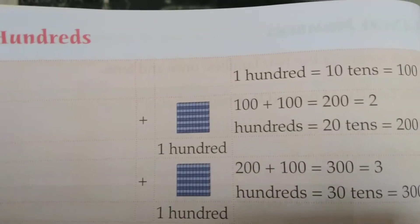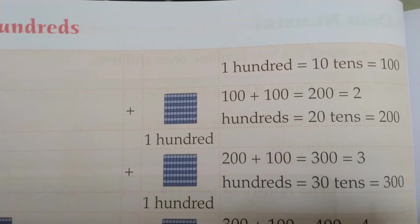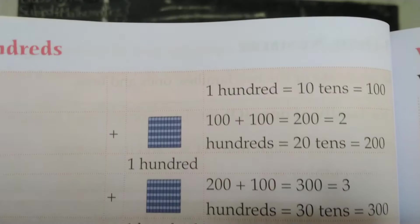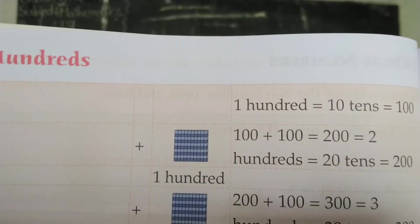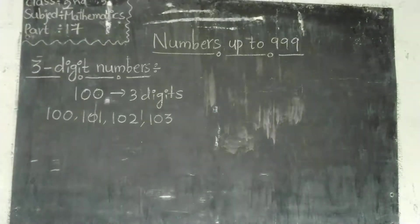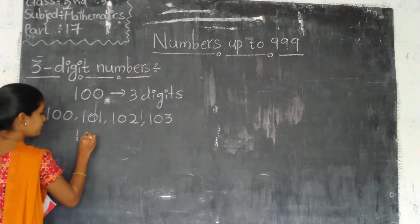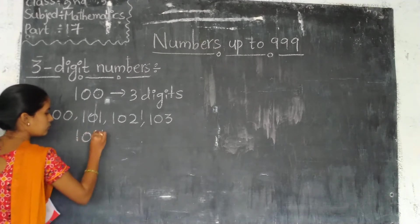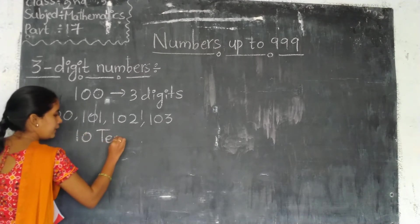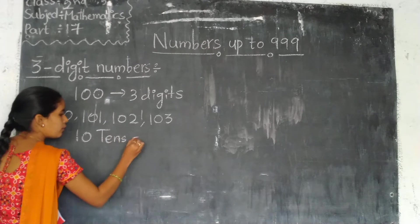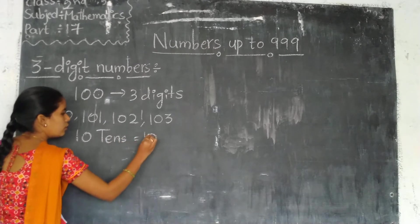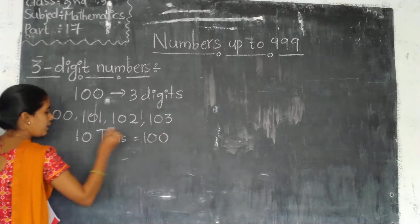10 tens equals 100. Okay? How is it possible that 10 tens make 100? This is a very very important concept. 10 tens equals 100.